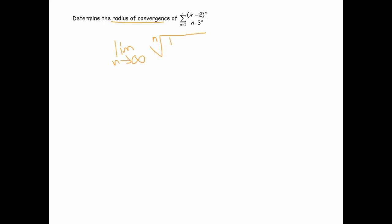Here we're going to use the nth root test to find the radius of convergence for this power series. That works by taking the nth root of the whole thing. We're going to be taking the nth root, and I'm going to put this x minus 2 to the n in absolute values. The reason you do that is because the nth root test applies only with terms that are positive, so we need to ensure that's positive.